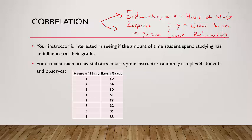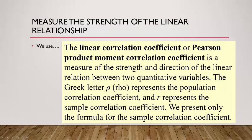That begs the question: how strong is this positive linear relationship? To measure the strength of a linear relationship we use what's called the linear correlation coefficient — sometimes called the Pearson product moment correlation coefficient. I'll always just call it the linear correlation coefficient. It's a measure of the strength and direction of the linear relationship between two quantitative variables.